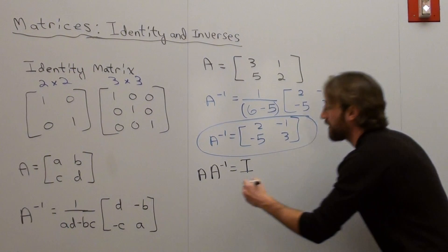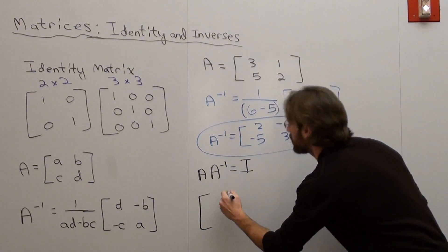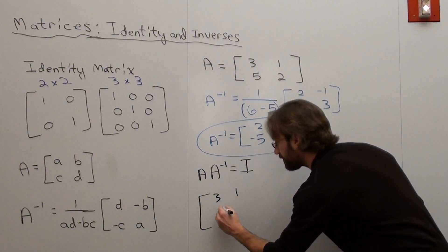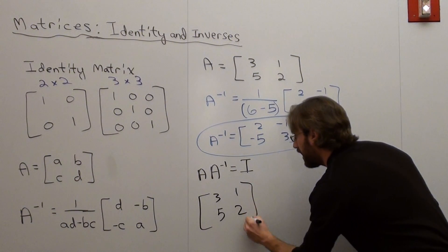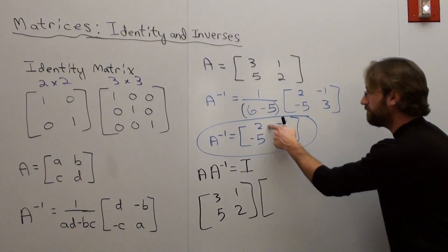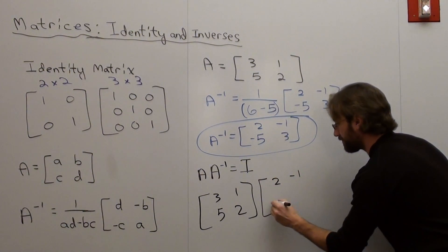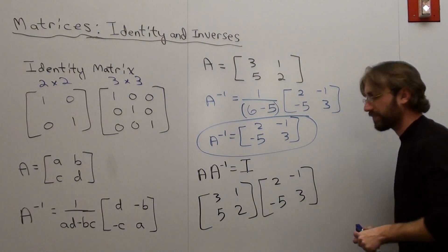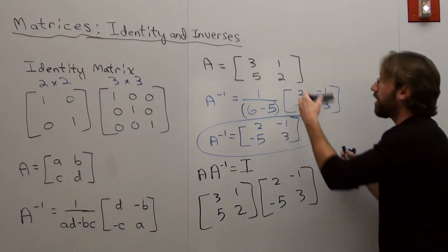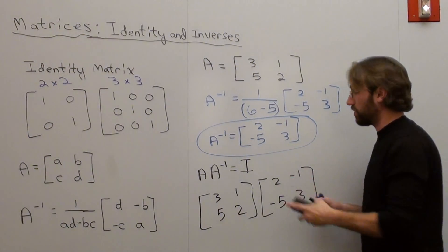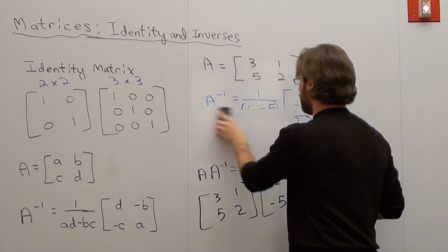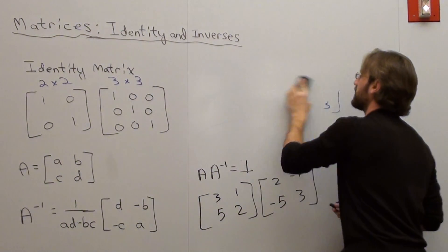But let me just write them down first. So my A matrix is 3, 1, 5, and 2. And I'm going to multiply it by 2, negative 1, negative 5, and 3. And see what we get. I'm going to go ahead and erase this part though because I'm going to need some room. But I went ahead and I wrote the matrices down.